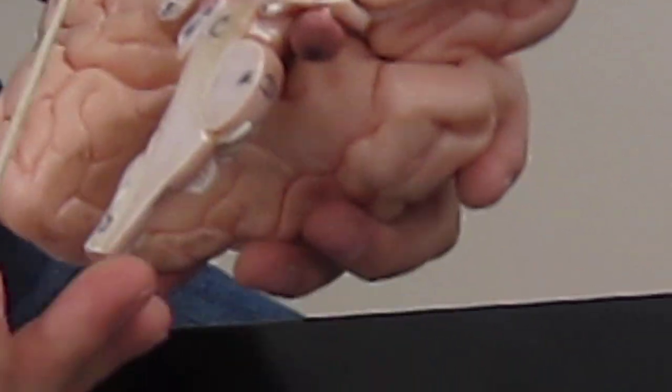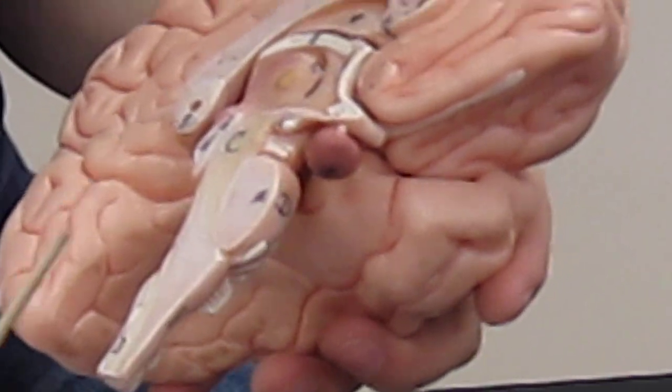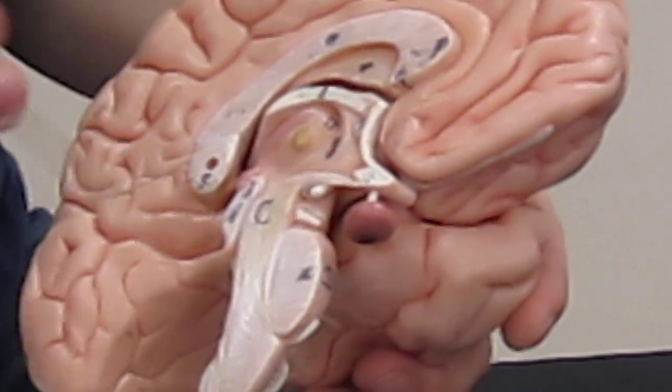The pituitary gland is right here. It looks like a cherry, and the infundibulum is the cherry stem.